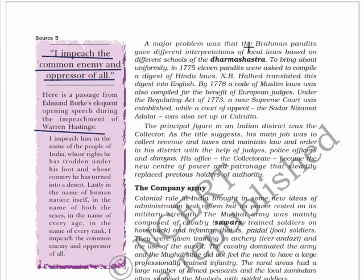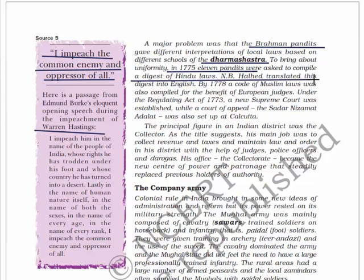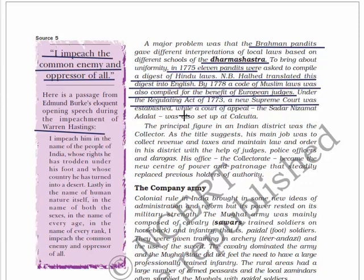A major problem was that Brahmin pandits gave different interpretations of local laws based on different schools of Dharma Shastra. To bring about uniformity, in 1775 eleven pandits were asked to compile a digest of Hindu laws. N.B. Halhed translated these texts into English. By 1778, a code of Muslim laws was also compiled for the benefit of European judges. Under the Regulating Act of 1773, a new Supreme Court was established, while a court of appeal - the Sadar Nizamat Adalat - was also set up at Calcutta.